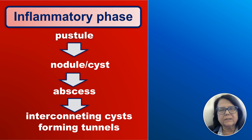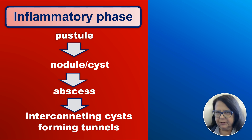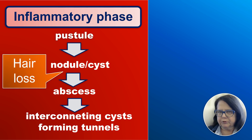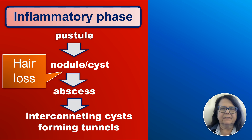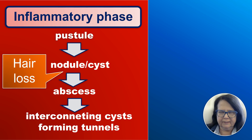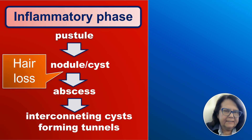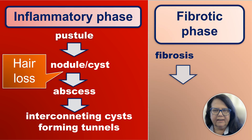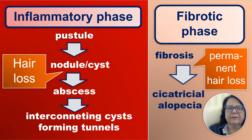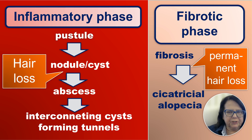So we will have a few stages of the disease. In the inflammatory phase, we will have first a pustule, then a nodule or a cyst, then an abscess. These abscesses tend to interconnect and will form tunnels containing purulent material under the skin. Then it switches to the fibrotic phase, when we have fibrosis and then development of cicatricial alopecia.